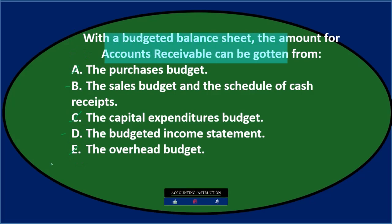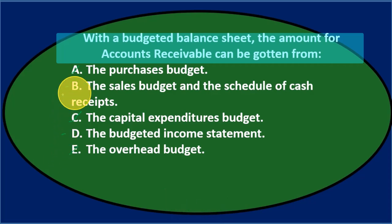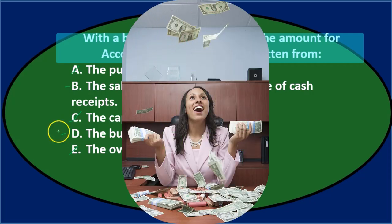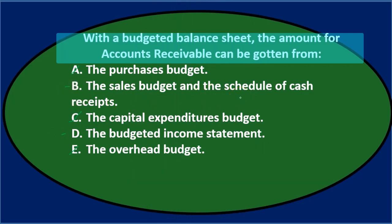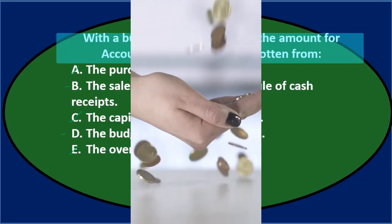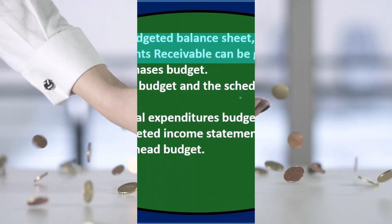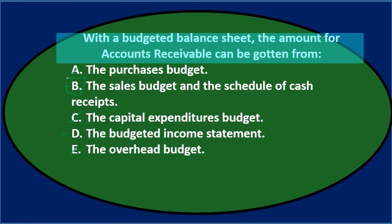Let's stick with B and D. With a budgeted balance sheet, the amount for accounts receivable can be gotten from either B, the sales budget and the schedule of cash receipts, or D, the budgeted income statement. Of those two, B sounds better — it has both sales and the schedule of cash receipts. We know what we sold, and we know the amount received from customers who may have paid on account and paid off their receivables. So B is the final answer: the sales budget and the schedule of cash receipts.